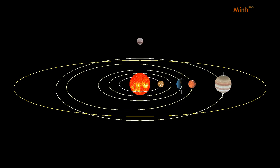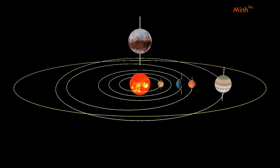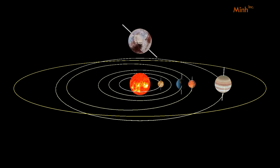Pluto is considered the smallest among all the planets and is at maximum distance from the sun in the solar system. Pluto is considered a dwarf planet. It is very small and is rotated, tilted 118 degrees on its own axis.